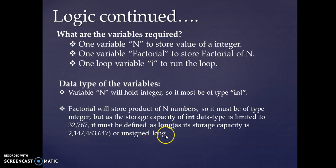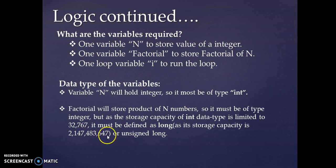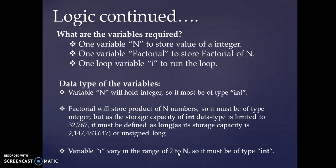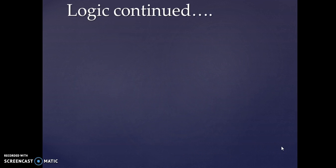Unsigned long can store positive values only and has double the storage capacity of the long data type. Finally, the variable i is the loop variable and will vary in the range of 2 to n, so it is of type int.